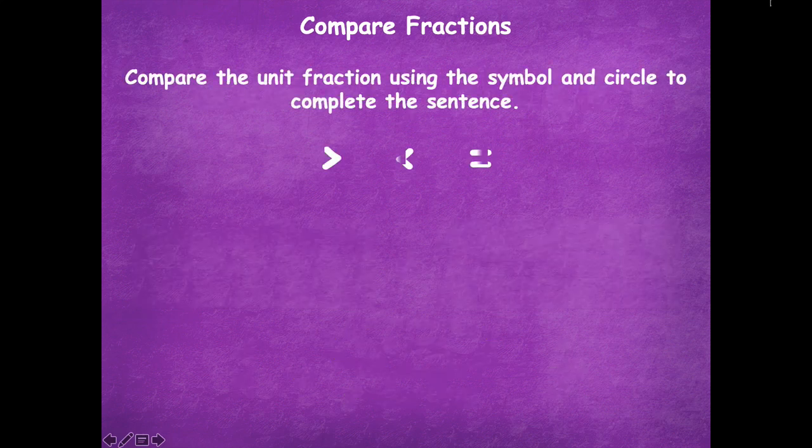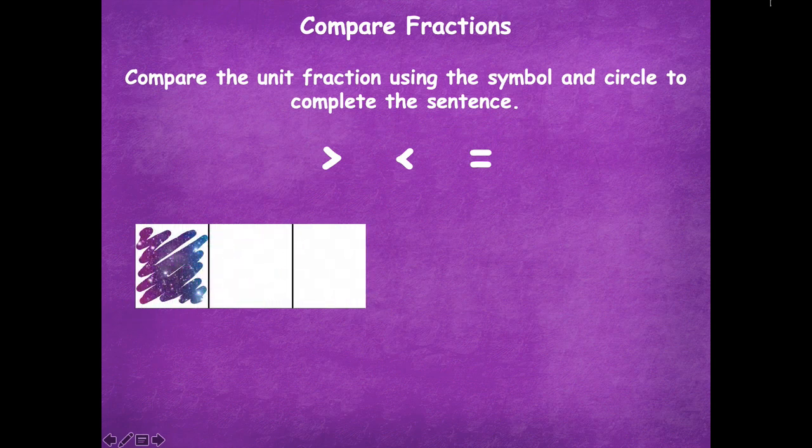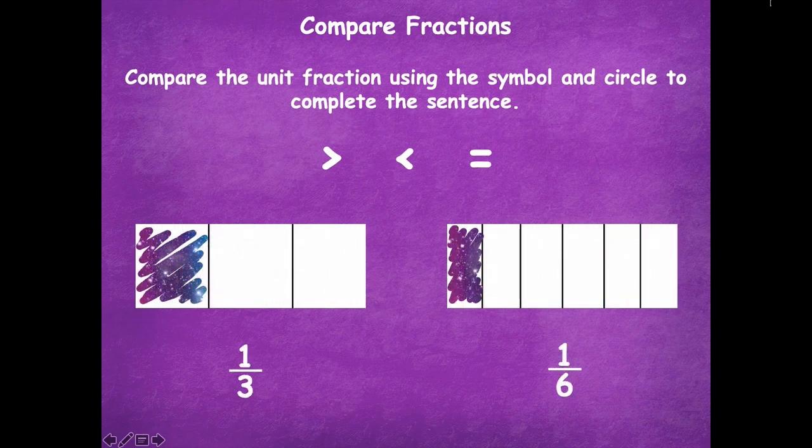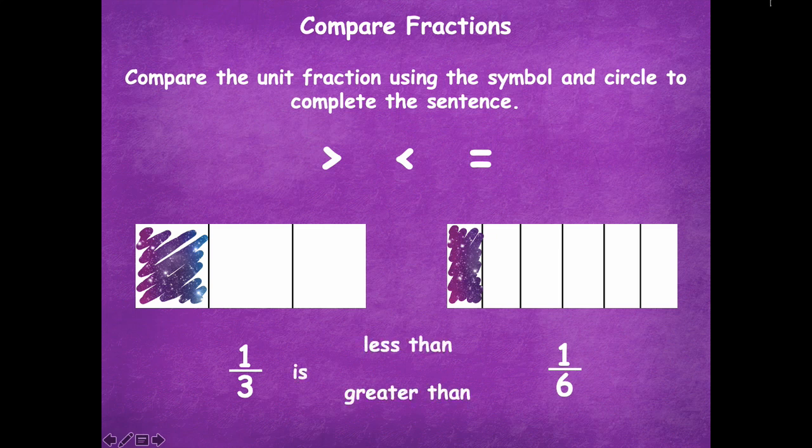Okay, alright, so here's what you guys are really going to do on your own. So same directions, here's one third, here's one sixth. Okay, so draw on your dry erase board the correct symbol to compare those unit fractions, and then write either less than, greater than, or LT, GT. Okay, so pause the video and do that, and then click play when you're ready to go over it together.